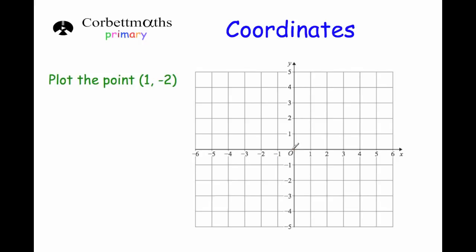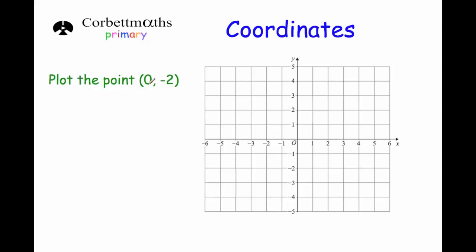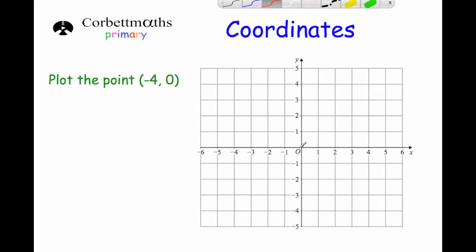Next, plot the point (1, -2). Go to the origin — 1 is positive so go one to the right, and minus 2 means two down. That's the point (1, -2). Next, plot (-5, -3). Minus 5 is five to the left, minus 3 is three down — so that's (-5, -3). Next, (0, -2): zero along the corridor so we stay at the origin, then minus 2 means two down — that's the point (0, -2). Then (-4, 0): go minus 4 along the corridor to the left, and zero means no up or down — so we plot the point (-4, 0).